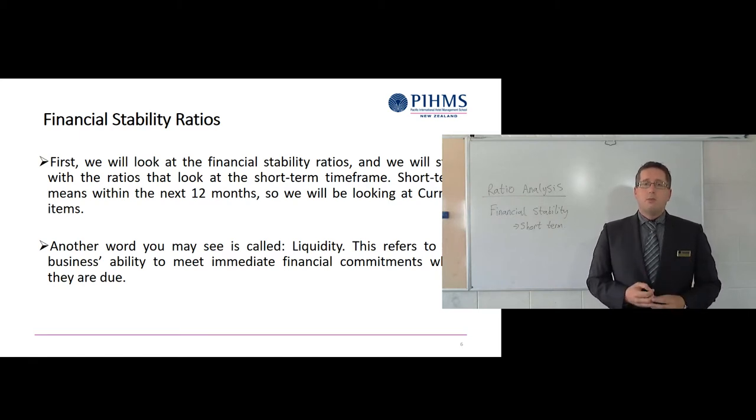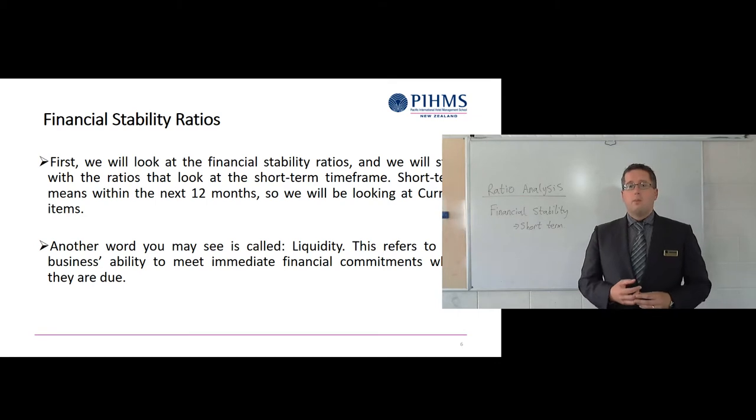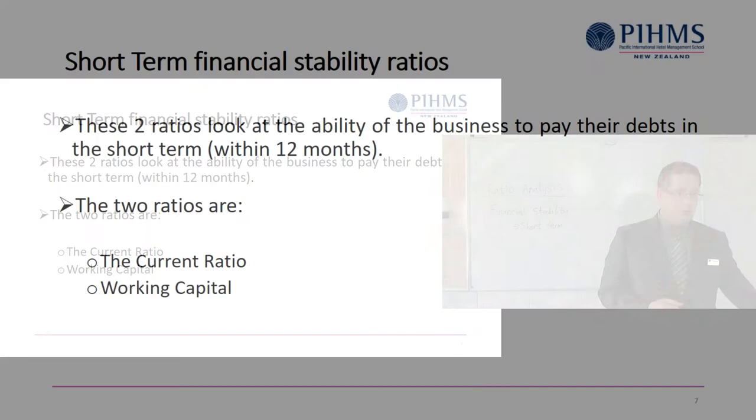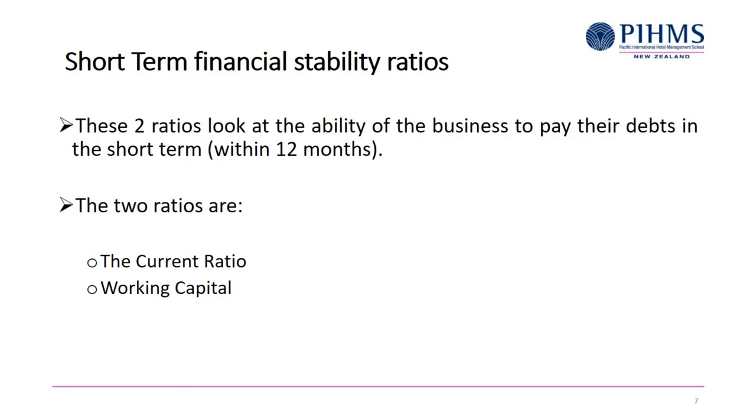So these two ratios that we're going to do, these show how well they can pay the short-term debts. Those ones in the short-term. So here are the first two. They are called the current ratio and then working capital. So we'll go through, I'll give some indication of what's a good result, what's not a good result. And then you can practice them and calculate them yourself.